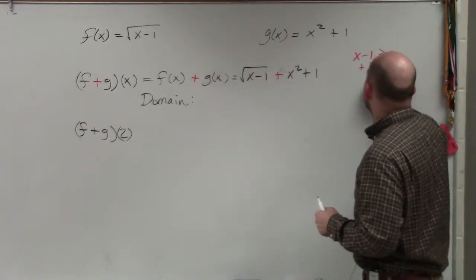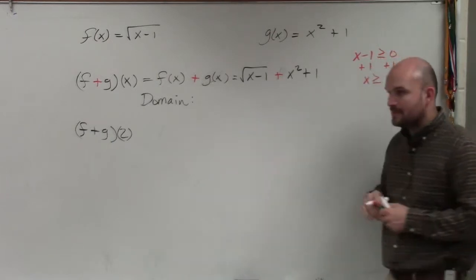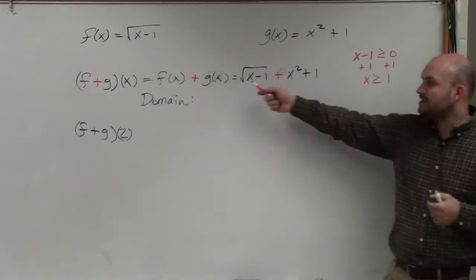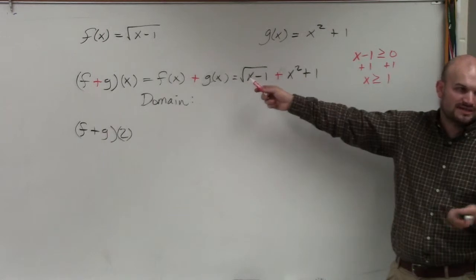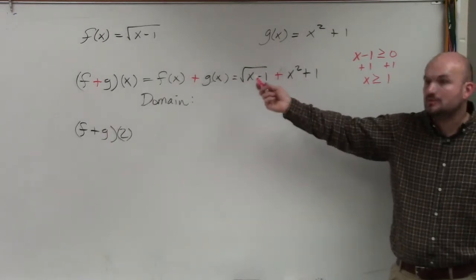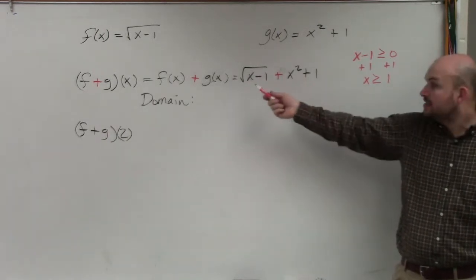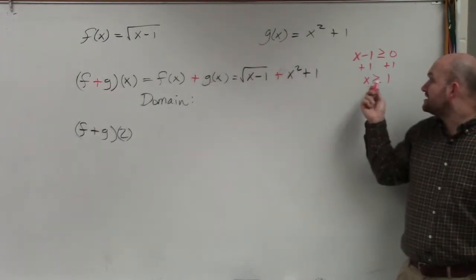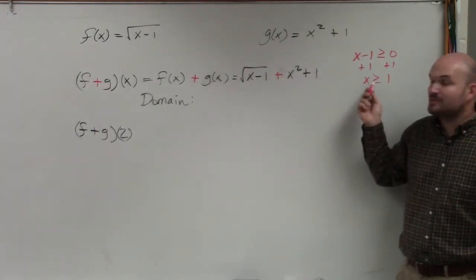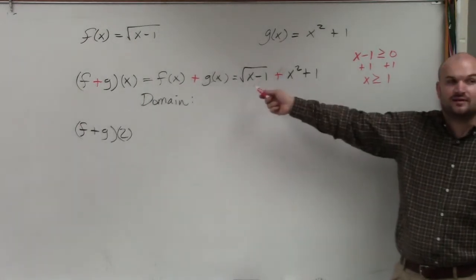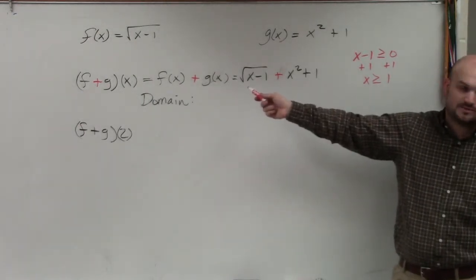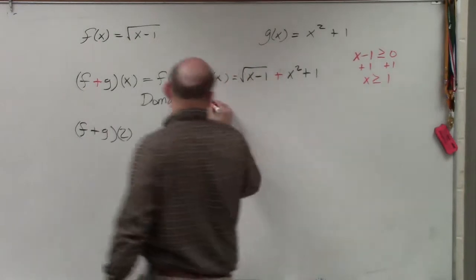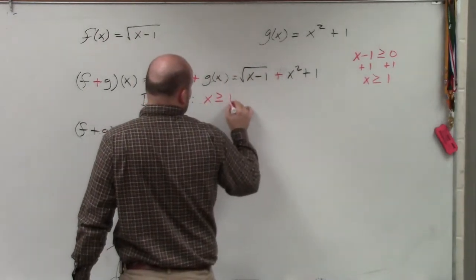So I add 1, add 1. x has to be greater than or equal to 1. And let's test that. Can I plug in 1? Yeah, 1 minus 1 is 0. Can you take the square root of 0? Yeah, that's fine. And it'd be 0 plus 1 plus 1, which would be 2. However, any number that's less than 1, though, would make that a negative, which I can't do, which would not be a part of my domain. So my domain is going to be x is greater than or equal to 1.